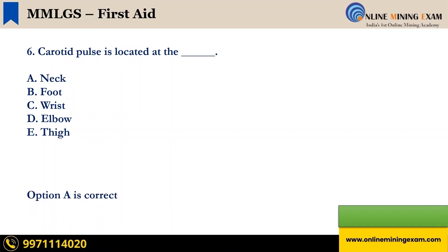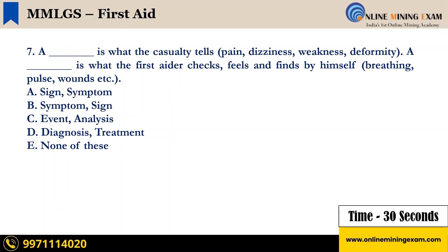Time up. The correct answer is C — wrist. Next question: a dash is what the casualty tells — pain, dizziness, weakness, deformity, etc. A dash is what the first aider checks, feels, and finds by himself — breathing, pulse, wounds, etc. Options are: A — sign, symptom; B — symptom, sign; C — event analysis; D — diagnosis, treatment; E — none of these. Your time starts now.